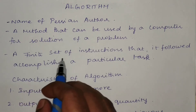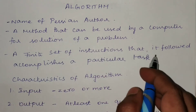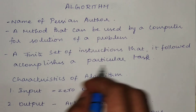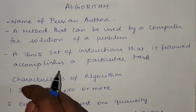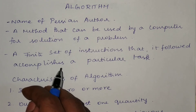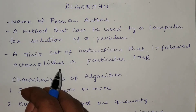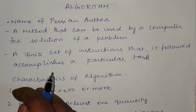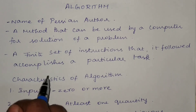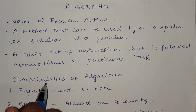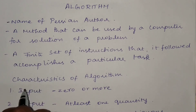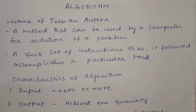The formal definition of algorithm is: a finite set of instructions that, when followed, accomplishes a particular task. In other words, a finite set of steps or instructions to be followed to perform any particular task is called an algorithm.